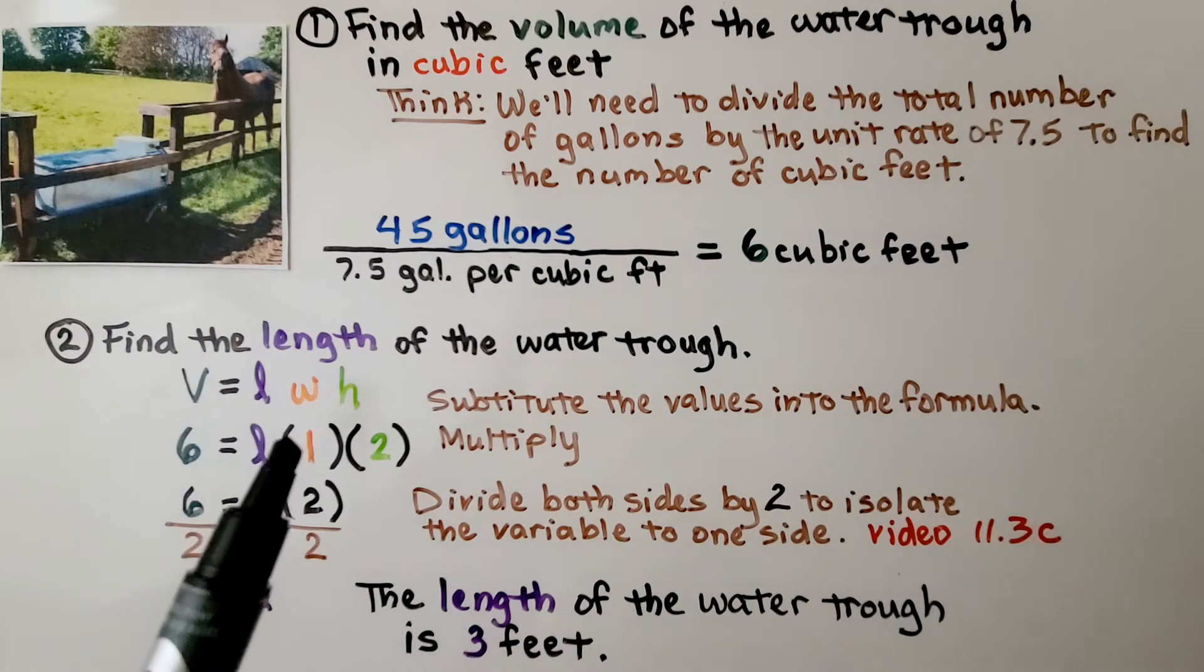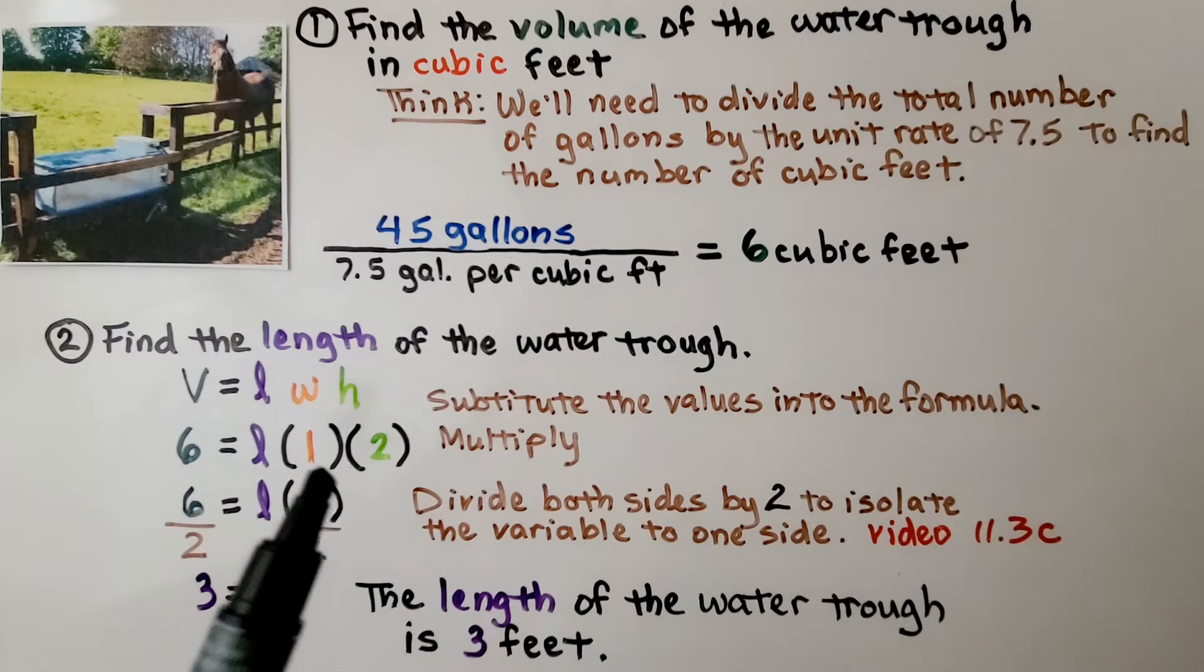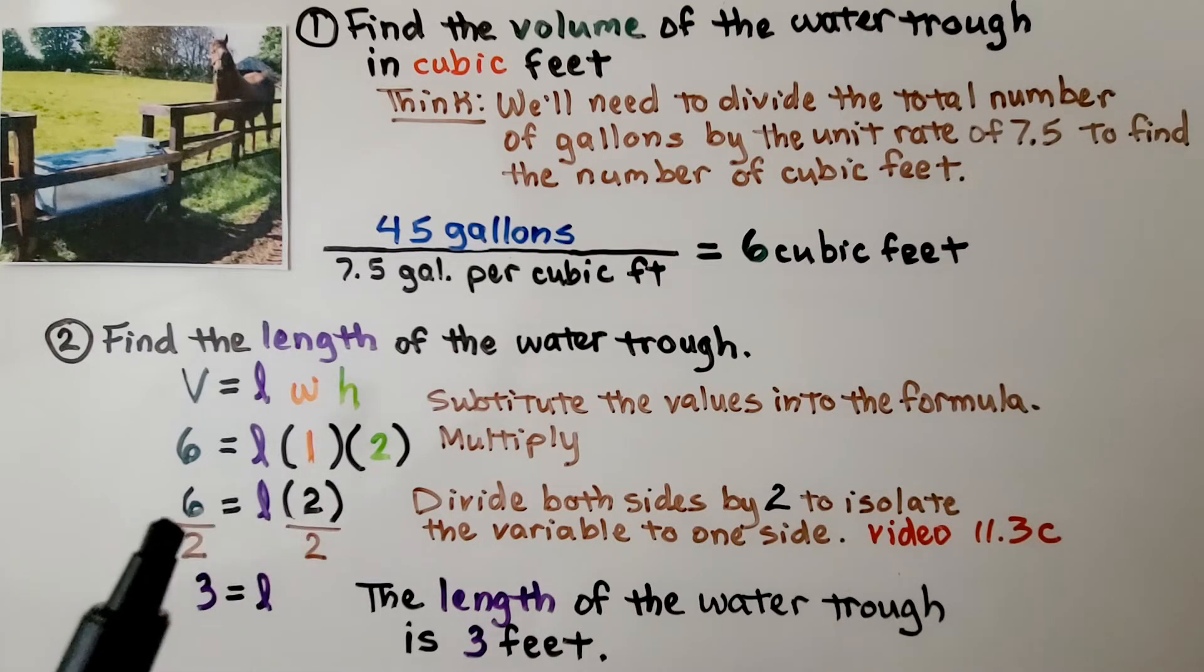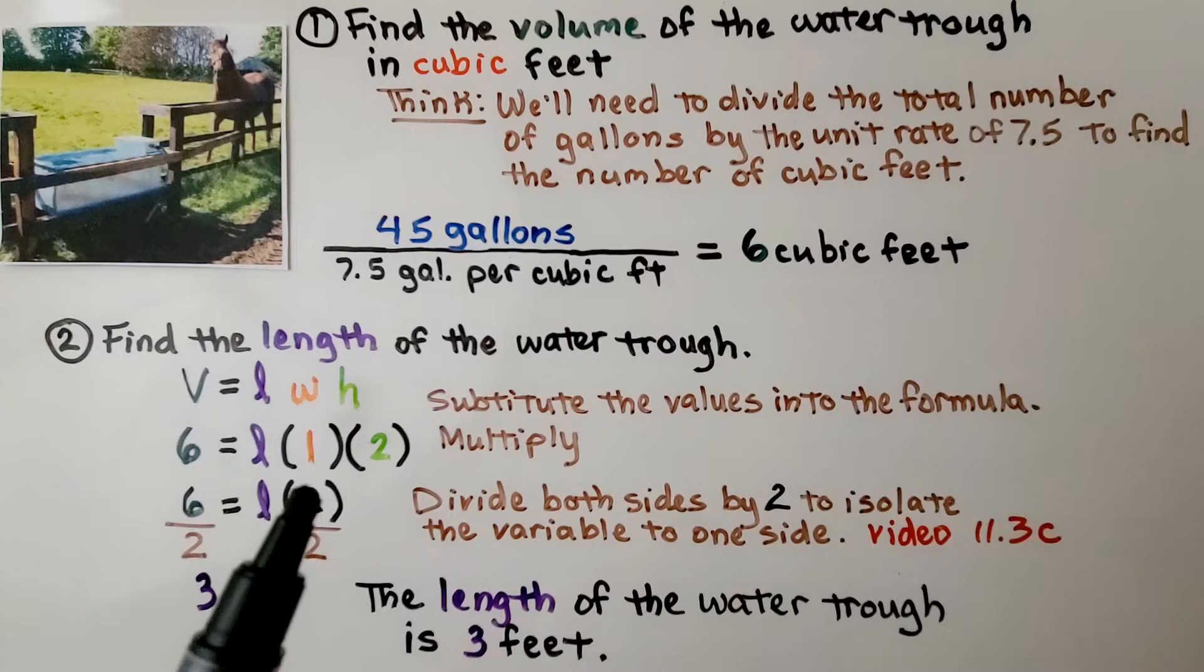We know the width is 1 foot and the height is 2 feet. We multiply. We have 1 times 2. That's 2. We have 6 is equal to some length times 2.